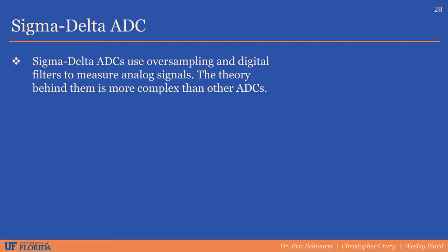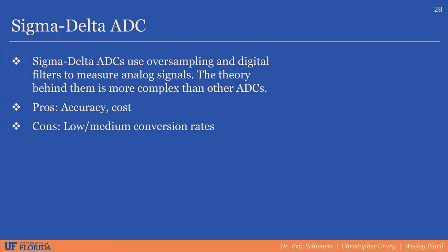Sigma-delta ADCs use oversampling and digital filters to measure analog signals instead of comparators like in SAR ADCs. The theory behind them is more complex because digital processing is required. Pros: they can be very accurate and are not very expensive to produce. Cons: they have low to medium conversion rates compared to other ADCs.